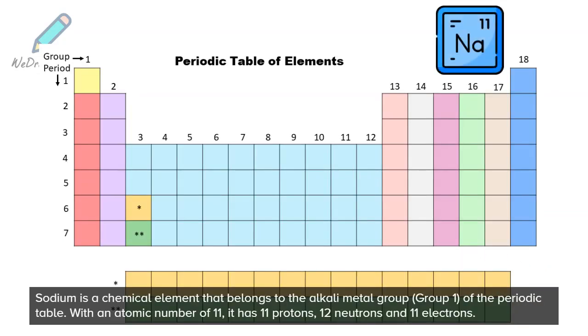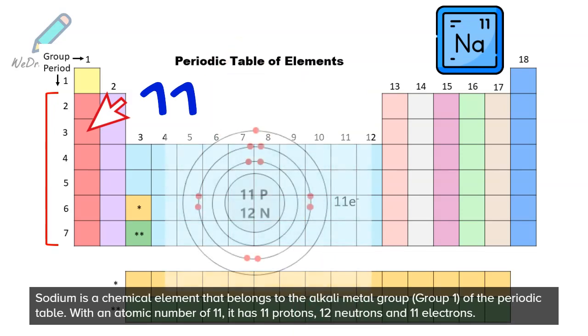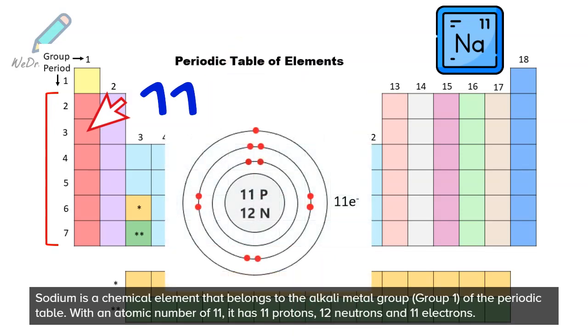Sodium is a chemical element that belongs to the alkaline metal group, group 1, of the periodic table. With an atomic number of 11, it has 11 protons, 12 neutrons and 11 electrons.